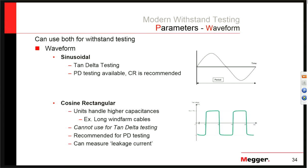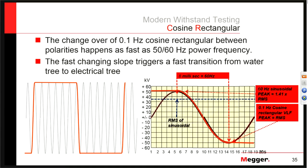Zooming in on the cosine rectangular waveform: it is 0.1 Hz VLF, but at the transition from positive to negative periods, the waveform is shaped to mimic power frequency. Based on the capacitance of the cable, that transition can switch in about 8 to 10 milliseconds — very similar to the change in polarity of 50 or 60 Hz power frequency testing. So we get the benefits of lower power consumption while also keeping the benefits of power frequency testing in that fast voltage transition.